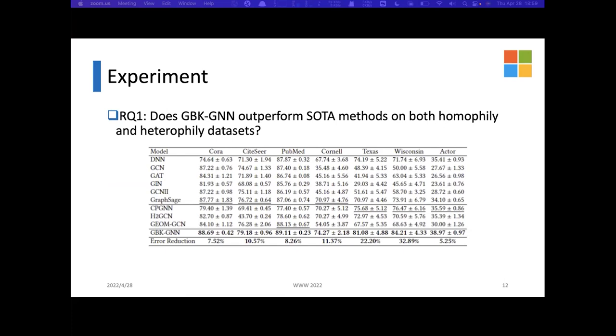GBK-GNN achieves state-of-the-art performance on all of the seven datasets. On homophilic datasets, the relative error rate reduction compared to the second-place models all have a decent gain. This illustrates that we do better on homophilic graphs than the other state-of-the-art methods. On the other hand, we also have good performance on heterophilic datasets compared to the second-place models. The relative error rate reduction on Wisconsin, Cornell, and Texas are significant.